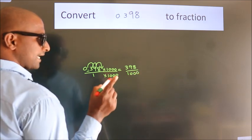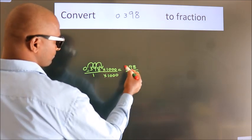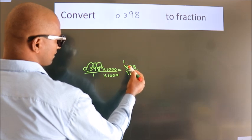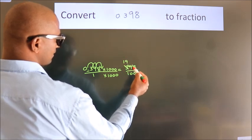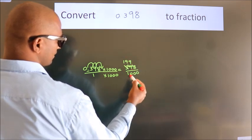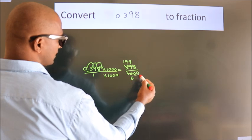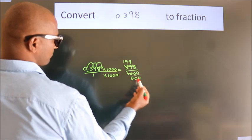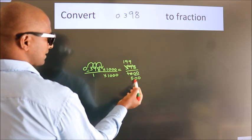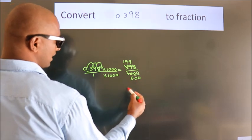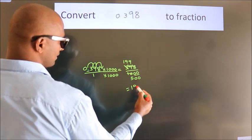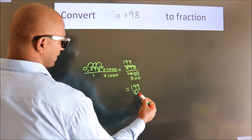Now I cancel with 2. 2 1s, 2 9s, 2 9s, 2 5s. These 0s as it is down. Further cannot be simplified. So our fraction is 199 by 500.